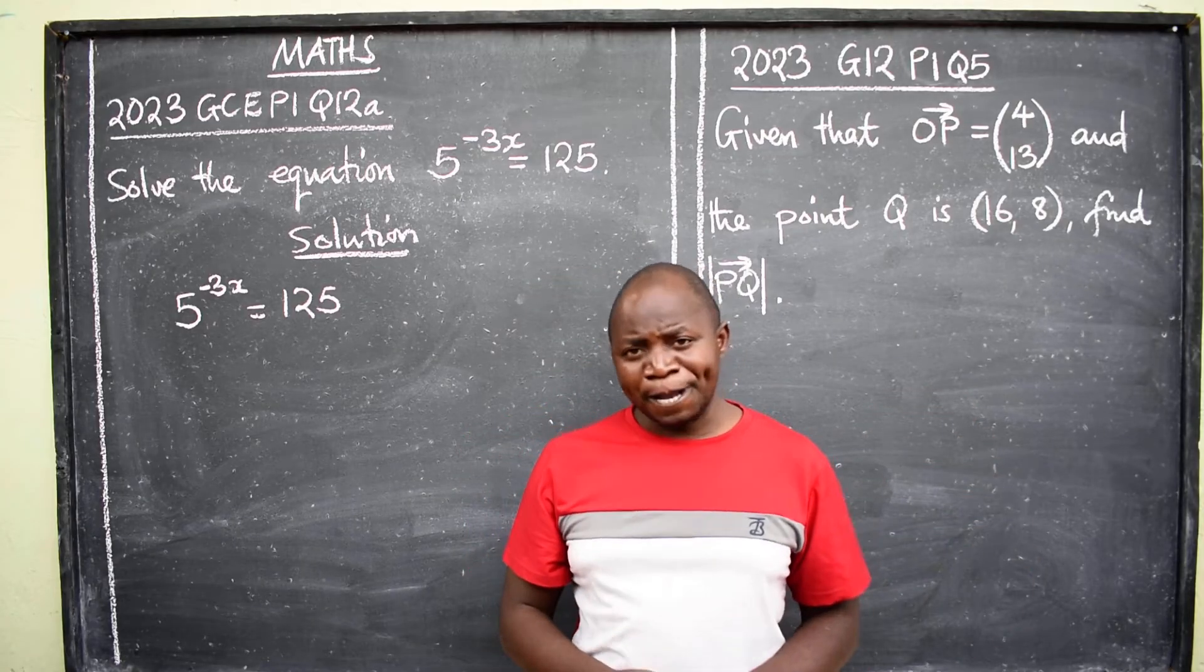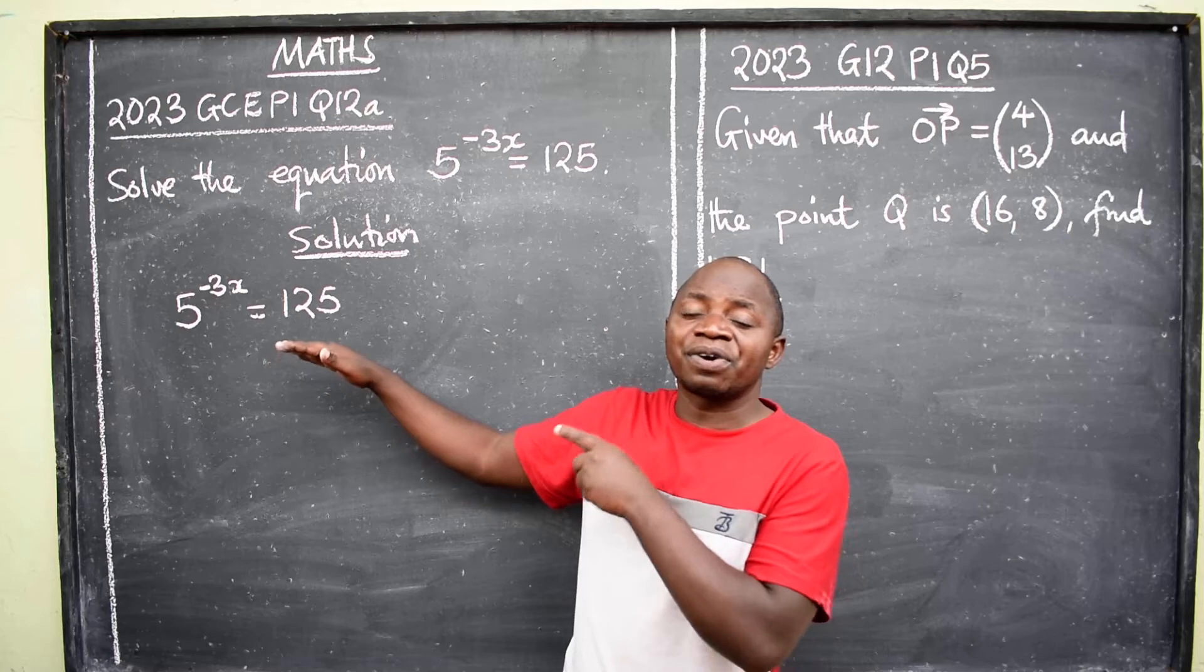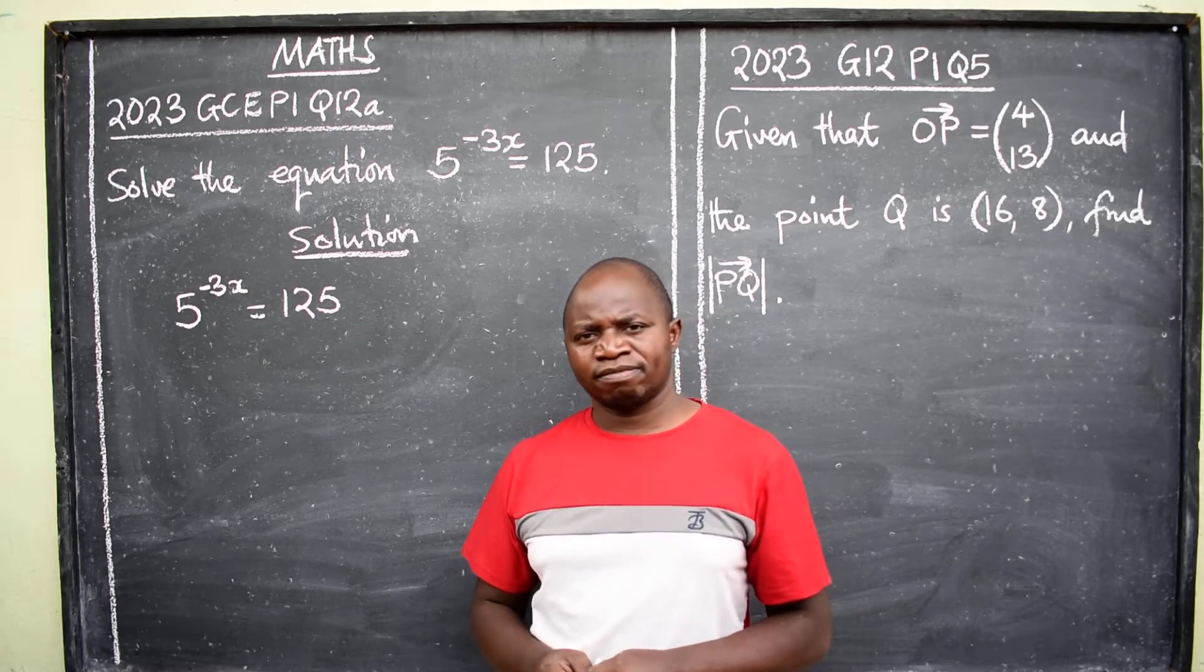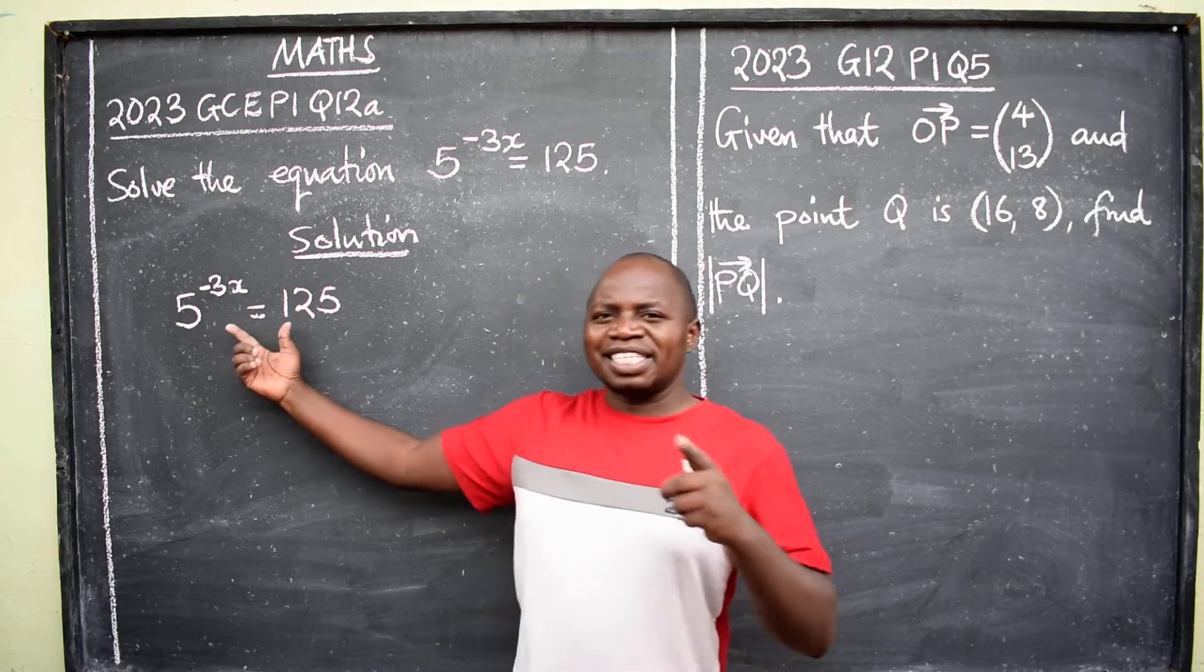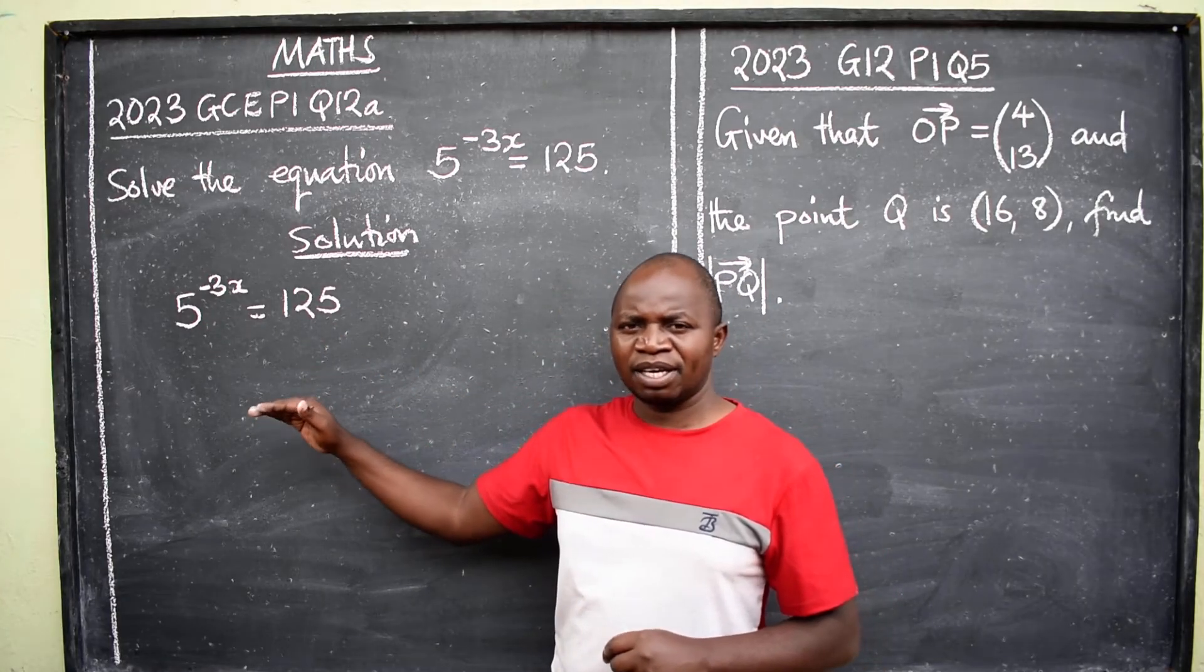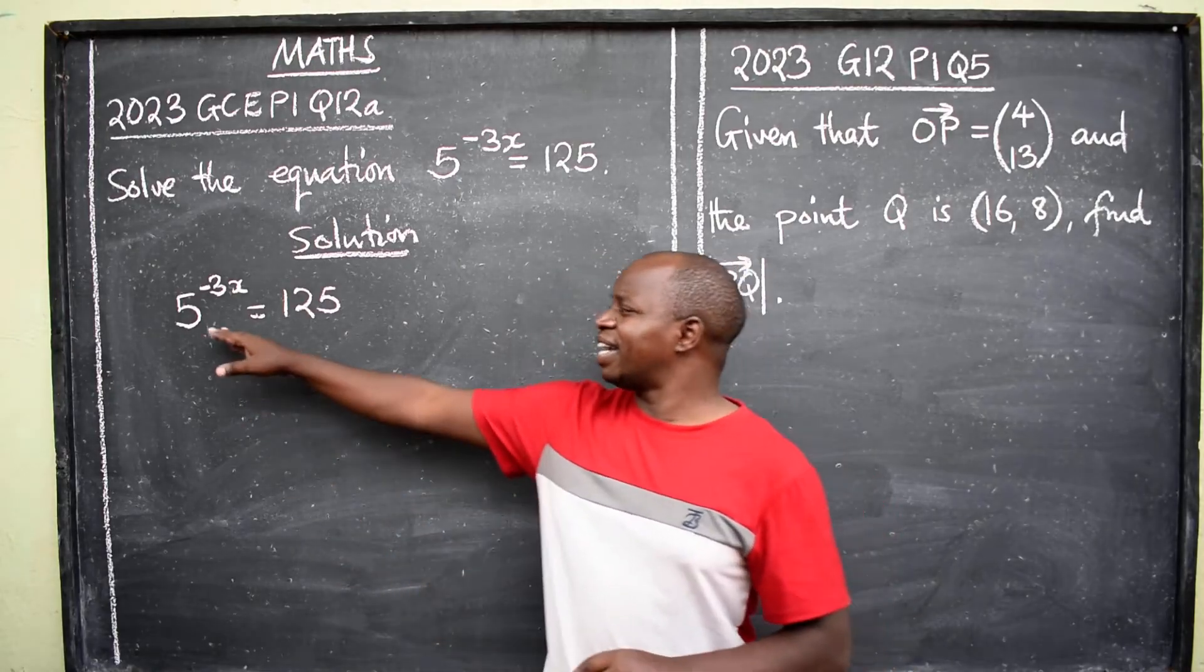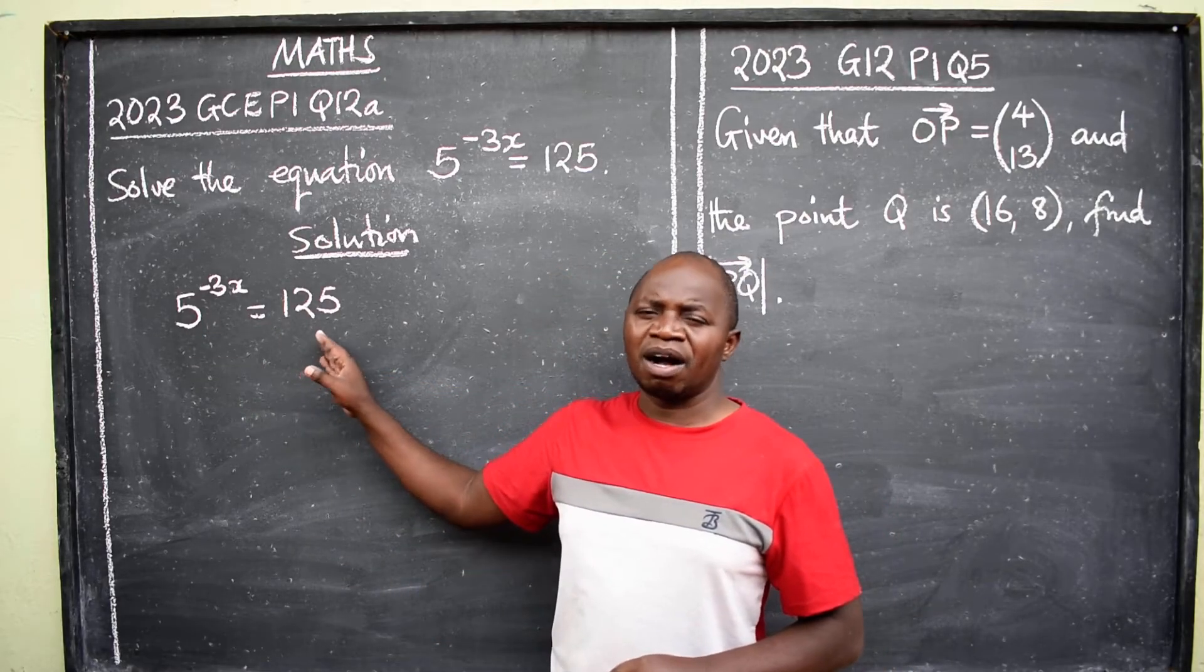When you are given a quadratic equation, you are able to know that this is quadratic, this is trigonometric, this is linear. Why is it important? You'll be able to apply the correct method. Now that I know this is coming from exponential, the common methods that we use under exponential are one: